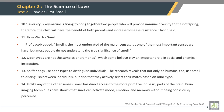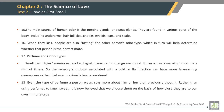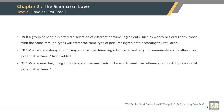First sentence of Paragraph 14: Unlike any of the other senses, smell has direct access to the more primitive or basic parts of the brain. First sentence of Paragraph 15: The main source of human odor is the apocrine glands. First sentence of Paragraph 16: When they kiss, people are also tasting the other person's odor type, which in turn will help determine whether the person is the perfect mate. First sentence of Paragraph 17: Smell can trigger memories, evoke disgust, pleasure, or change our mood.